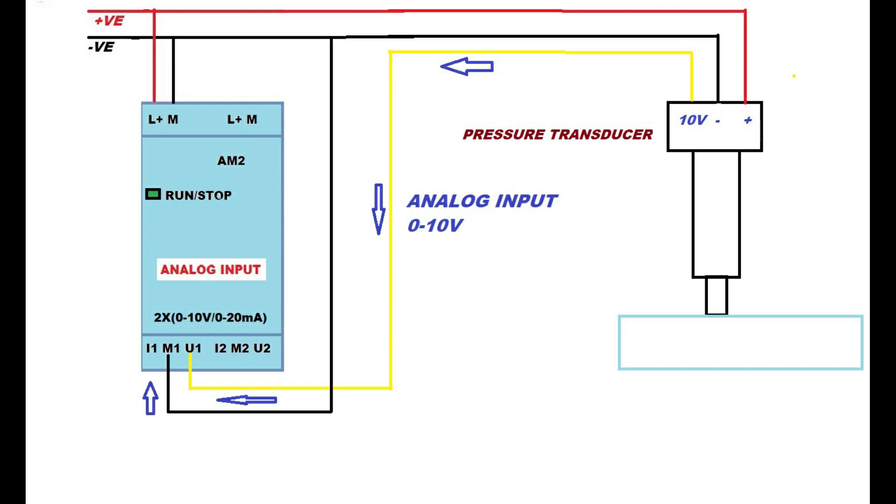You can use a maximum of eight analog inputs. Apart from these four, you can add four more by extension module. Each extension module has two analog inputs like current input and voltage input with separate terminal conditions.